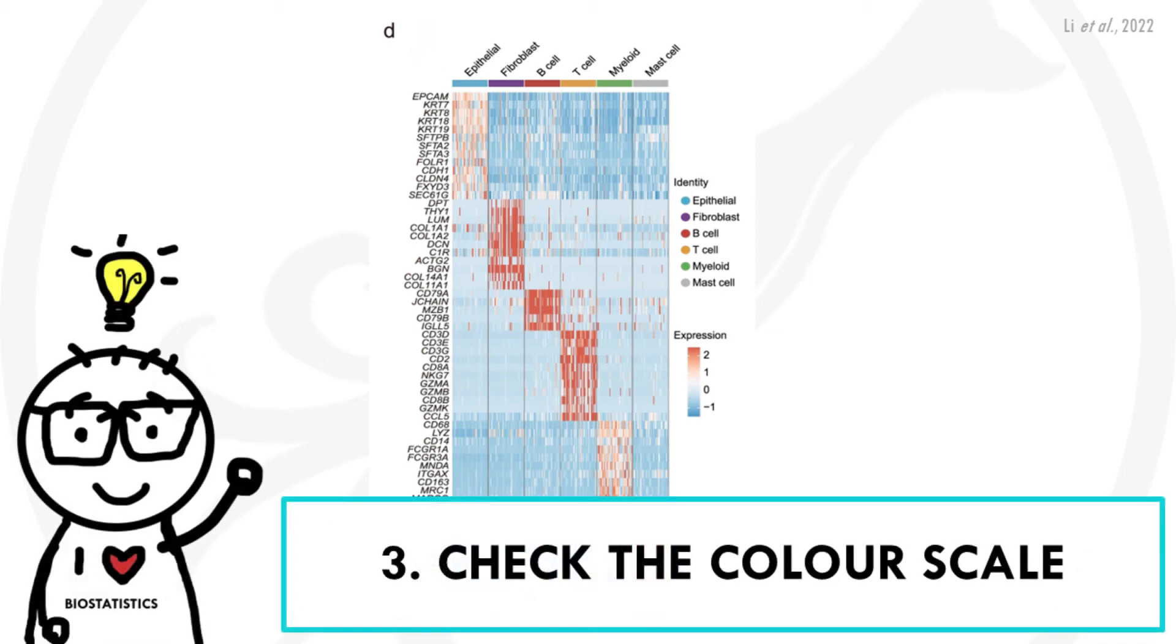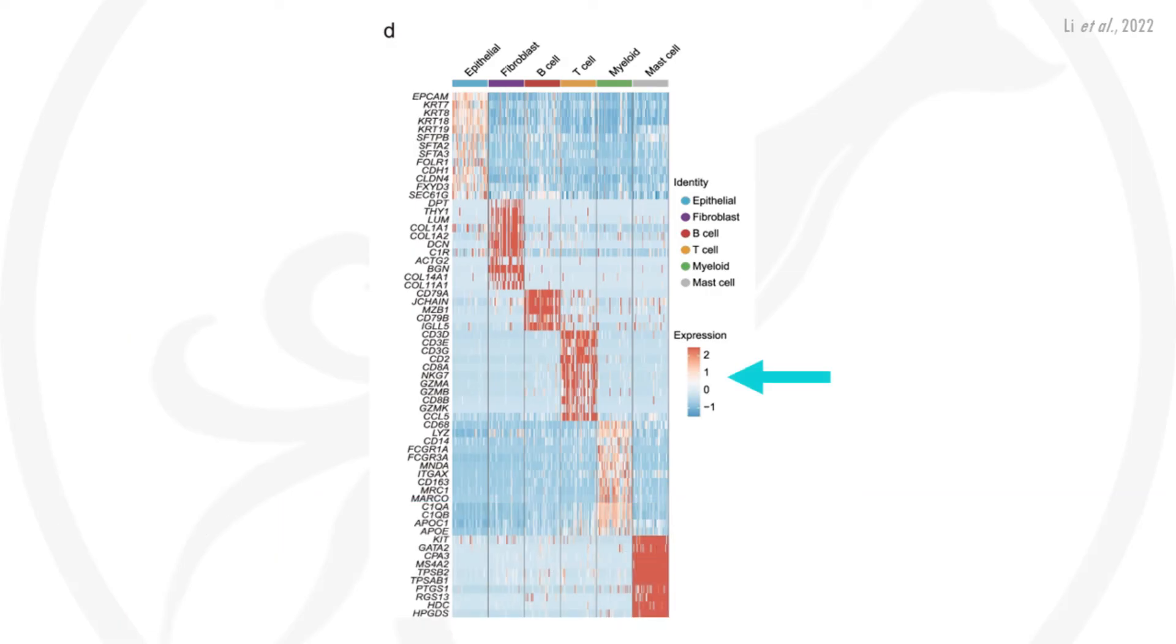The next step is to check our color scale. Usually the log2 fold change for each gene will be shown, and here it doesn't specify it. It does in the actual publication, of course, but in this case we see that up-regulated genes are in red and down-regulated genes are in blue. And this will help us identify with a quick glance patterns of up-regulated, so generally red areas, and down-regulated genes, generally blue areas.